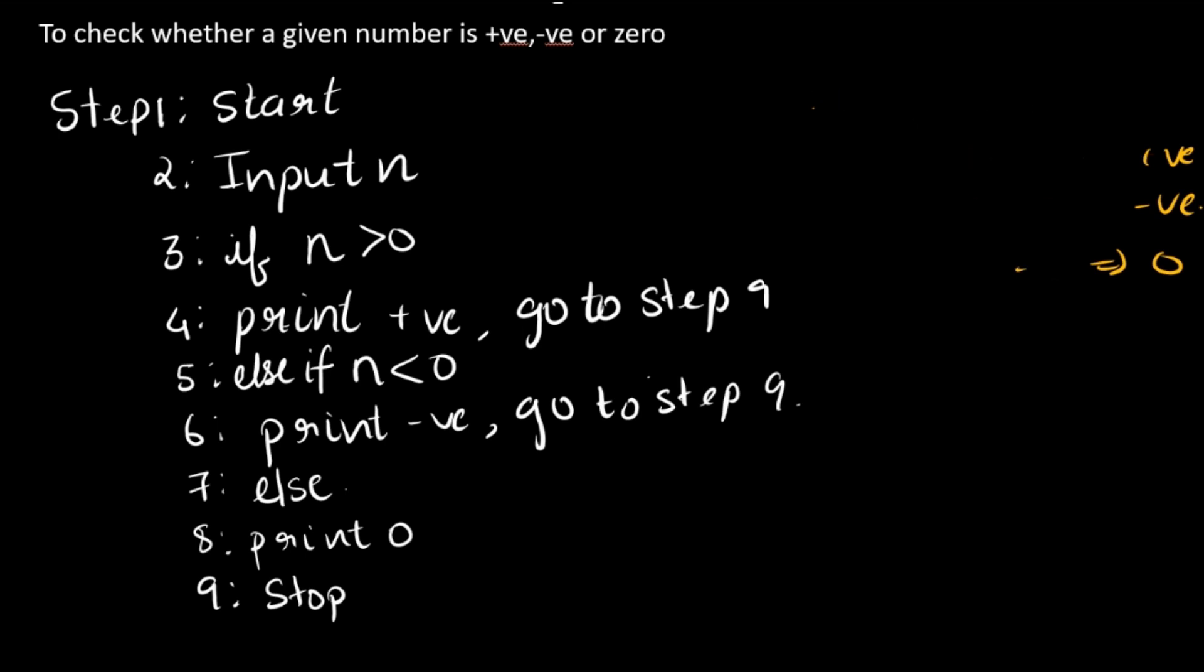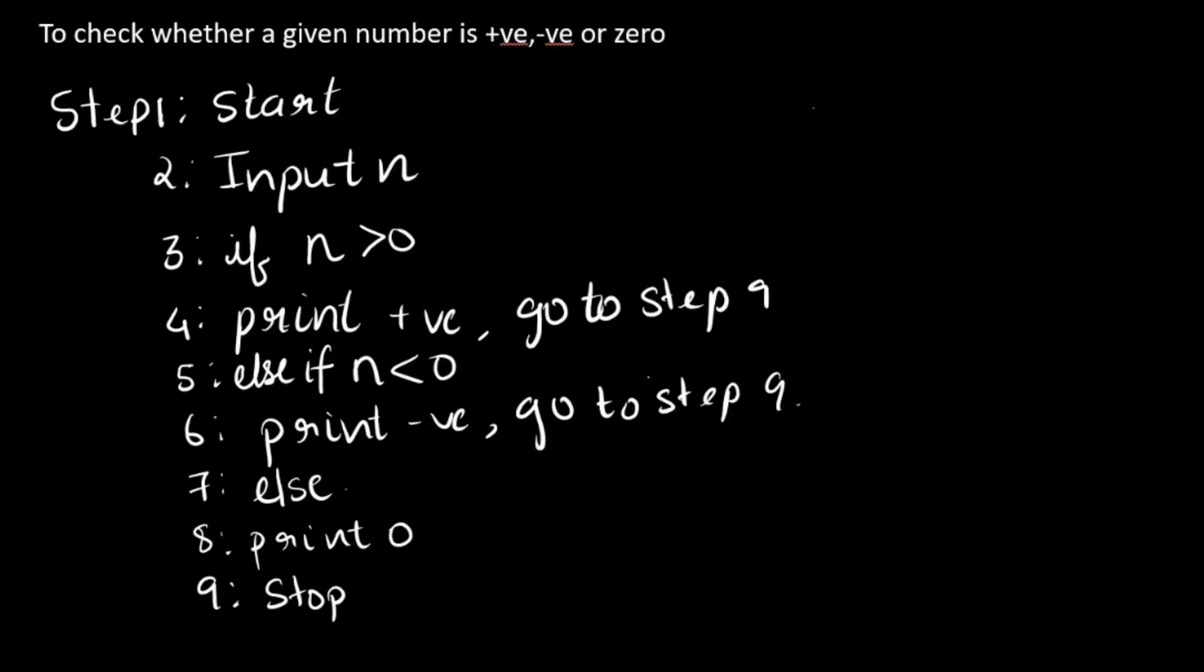Now let's try doing the flowchart of the same thing. If you can try the algorithm properly then flowchart isn't a trouble. Okay, the first step is start. Okay, next step is inputting n. The symbols and other things I have already discussed in my main lecture which I'll put in the description box, so please do check that out if you don't know about the symbols, because the symbols are the main things. Rest is just an algorithm which we're writing it in a flowchart.